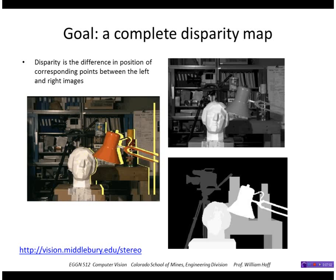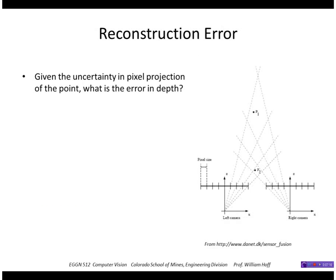Let's take a look at the reconstruction error now. Given the uncertainty in the pixel projections of a point, what is the corresponding error in depth? If I see a point P, let's call it P1 or say P2, since I don't know exactly where it is within these finite size pixels, point P2 could be anywhere within this little quadrilateral.